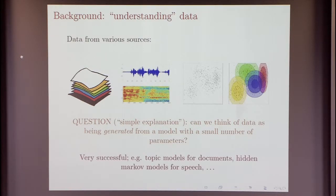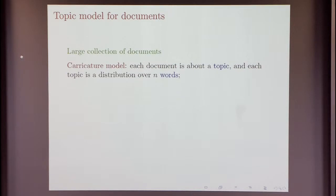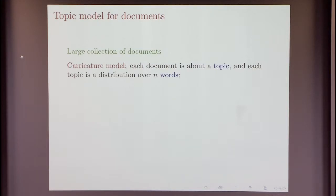And this has been very successful — for example, topic models for documents and hidden Markov models for speech. I'm going to give an example of topic models for documents, partly because it's one of the simplest models. In its simplest version, you think of a document as being about precisely one topic, and you think of a topic as a distribution over words.